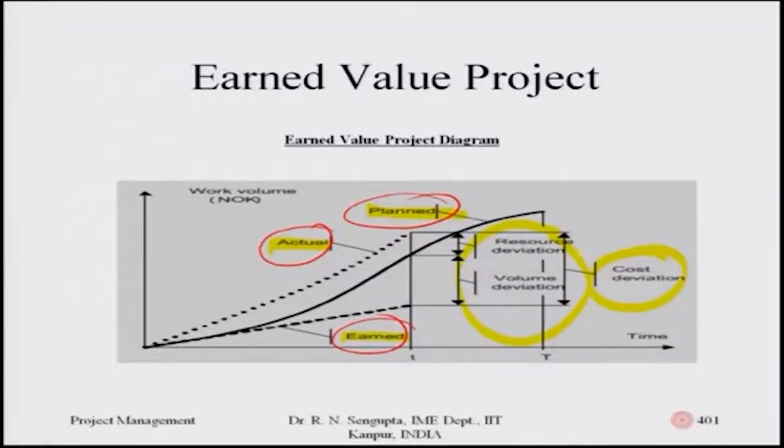If you do not overshoot time, you should get some benefit — if you deliver a project beforehand, you gain something; if you deliver after the deadline, there is a penalty. This negative cost and positive cost should be considered to understand the balance between actual and planned total cost. The earned value project diagram's y-axis can be total cost, cumulative cost, resource allocation utilization, or work volume.